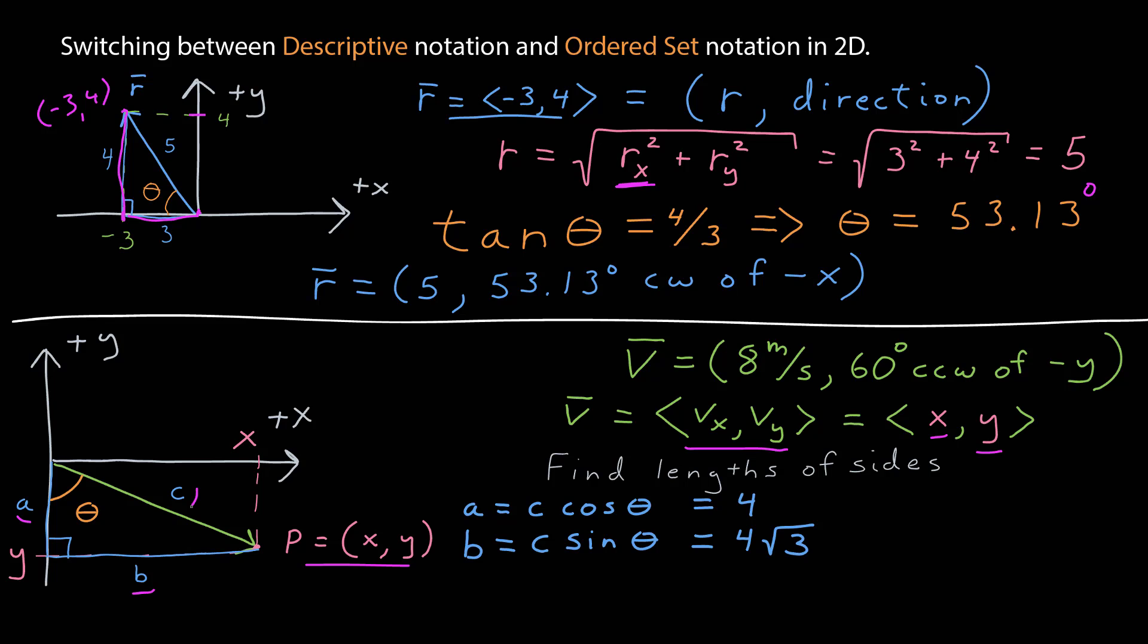Do the same thing for b, using the other rule, c times sine of theta, sine of 60 degrees is a square root of 3 over 2.